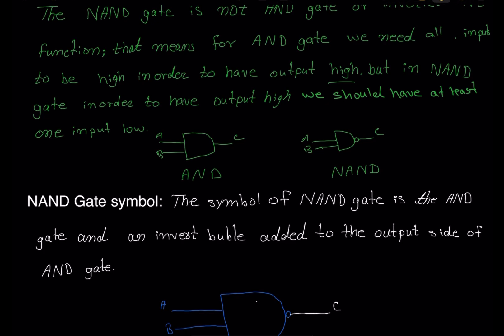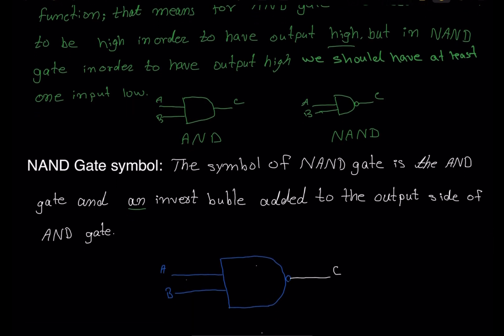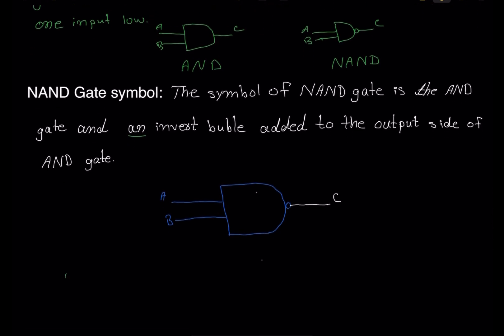The symbol of the NAND gate is the AND gate with an inverted bubble added to the output side of the AND gate. If you take that bubble out, that's the AND gate, but we add a bubble after that. That bubble on the output is what makes it a NAND gate symbol. A and B are the inputs, that is our inverted bubble, and C is our output.